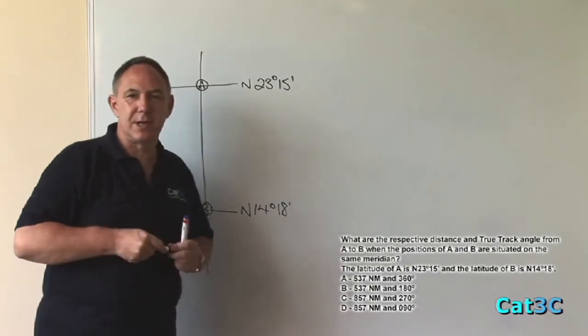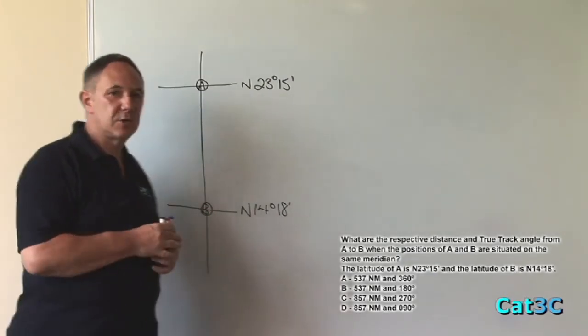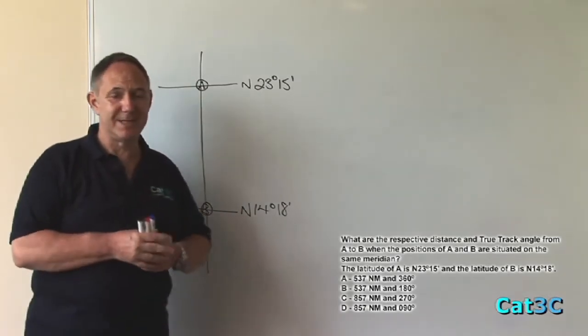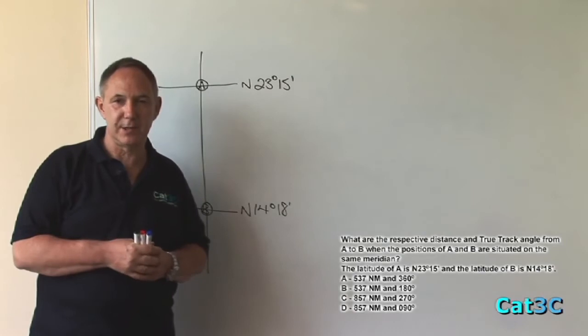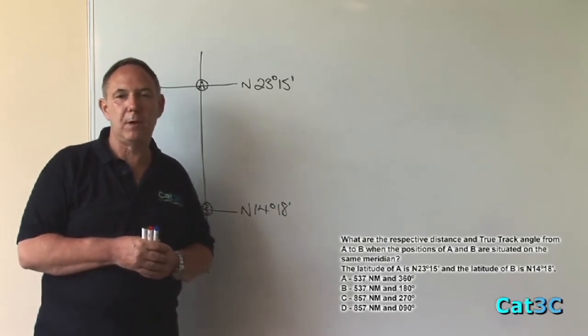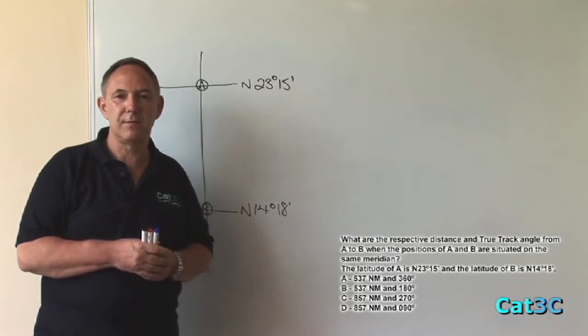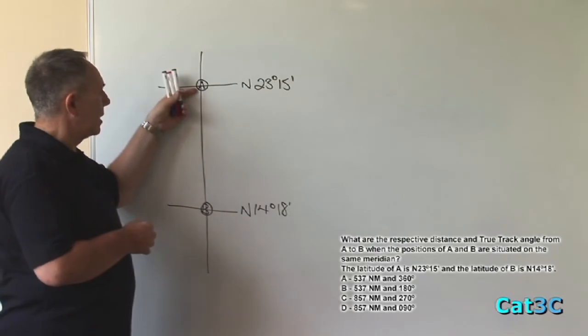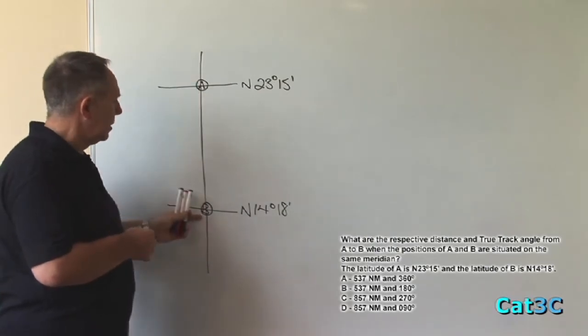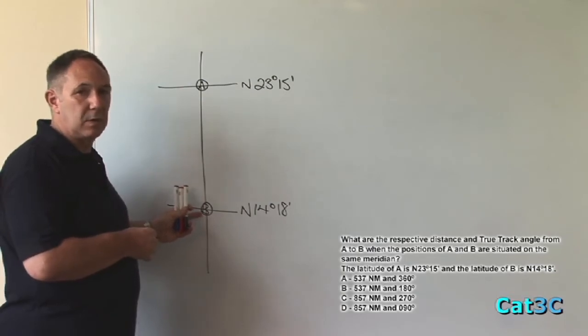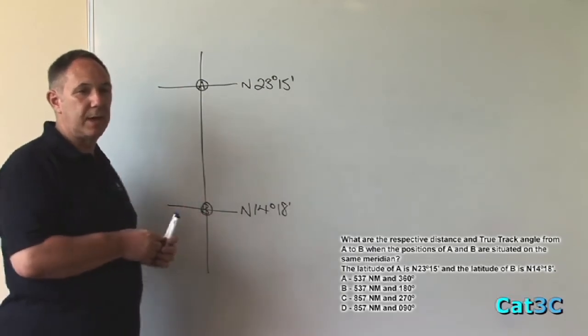What the question is asking us for are the distance and true track angle from A to B. Well, firstly, a little bit of exam technique. Look at the four answers. The actual track bearing on all four answers is different. Each one is different to the other one. Therefore, the bearing along meridian from A to B is in a southerly direction. It can only be one answer. It can only be option B, which is 180 degrees.